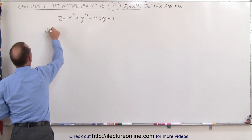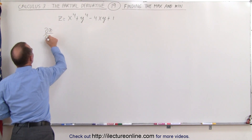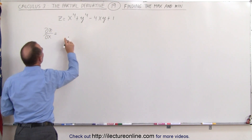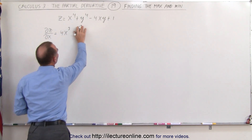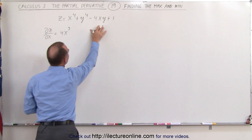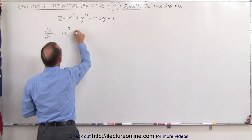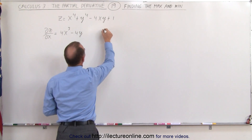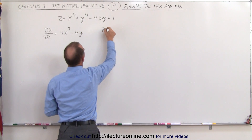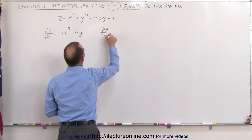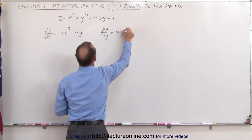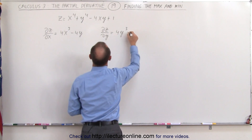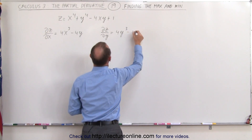The partial of z with respect to x is equal to 4x cubed. The y⁴ term gives 0, and with respect to x we get minus 4y. The partial derivative of z with respect to y is equal to 4y cubed minus 4x.